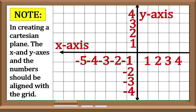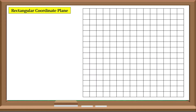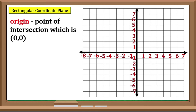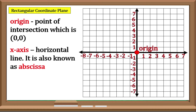Now let us identify the parts of the Cartesian Coordinate Plane. First is the Origin — it is the point of intersection, which is zero-zero. Next is the X-Axis: it is the horizontal line found on the plane, also known as the Abscissa.